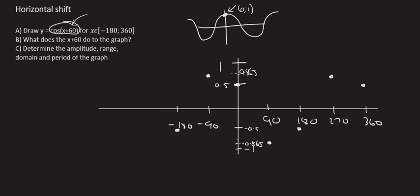So the point 0,1 would then become negative 60 and 1. So that's going to be somewhere over here. So I'm just going to label this point as minus 60 and 1. Then this point over here is normally 180 and negative 1. So now it's going to become 120 and negative 1. So that's going to be somewhere over here.